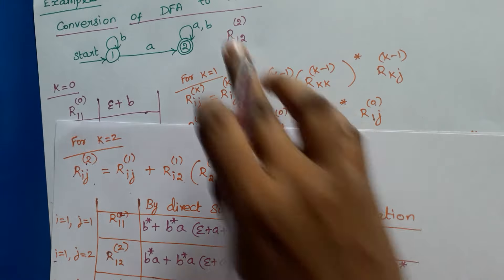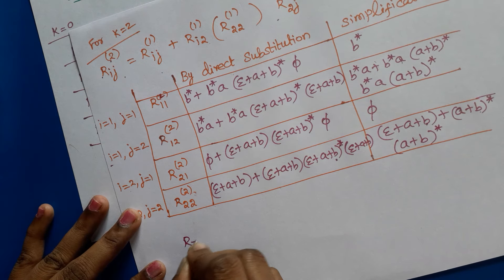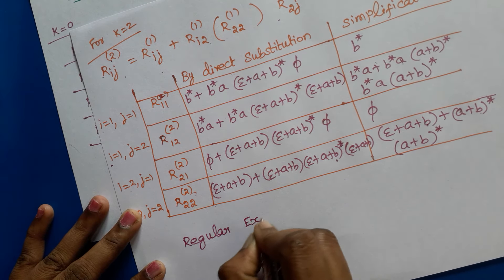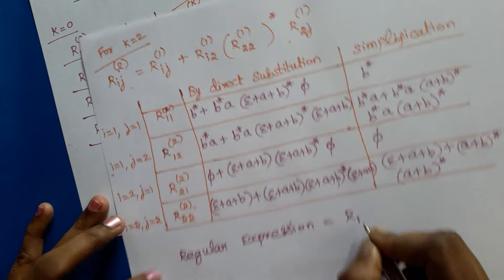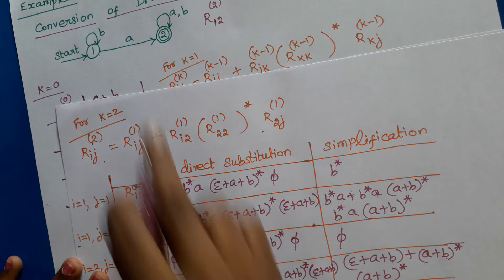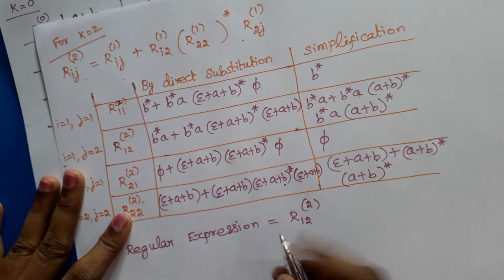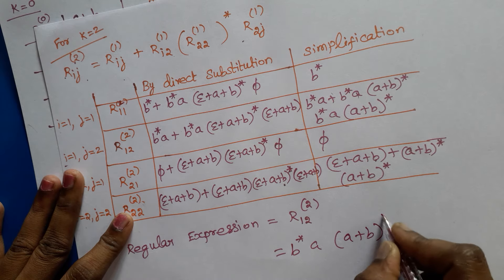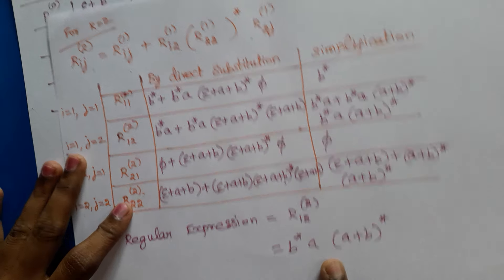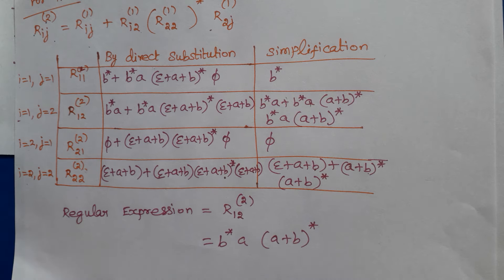The final regular expression we need is r12 to the power 2, since the start state is 1, the final state is 2, and the total number of states is 2. Therefore, the equivalent regular expression for the given DFA is b* a (a+b)*. Thank you.